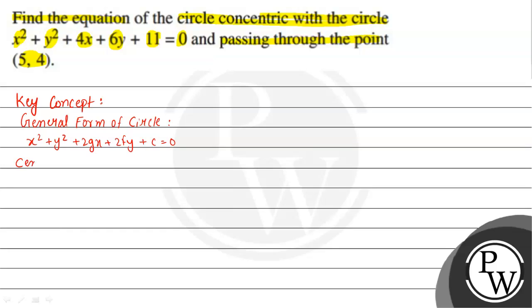Its center coordinates are (-g, -f) and the radius is equal to square root of g² + f² - c. If you use a concept here, that is concentric circles.